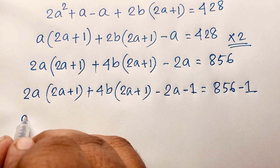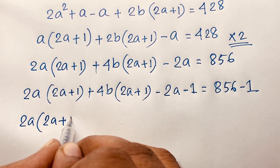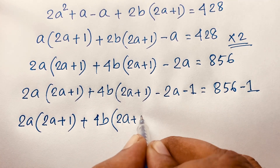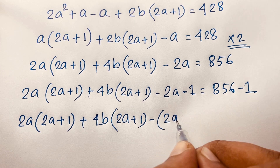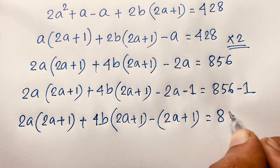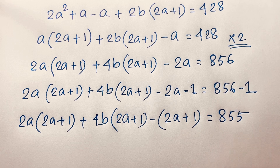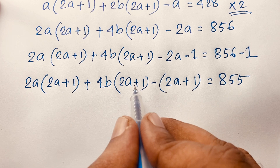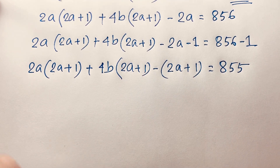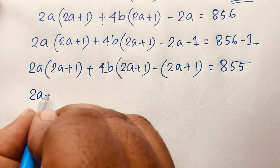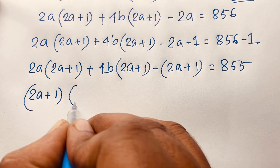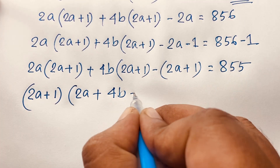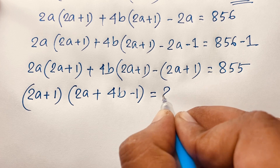You can say here is 2a times 2a plus 1, plus 4b times 2a plus 1, and taking negative 1 as common, it gives 2a plus 1 is equal to 855. Now 2a plus 1 is common throughout, so it will be 2a plus 1 times 2a plus 4b minus 1 is equal to 855.